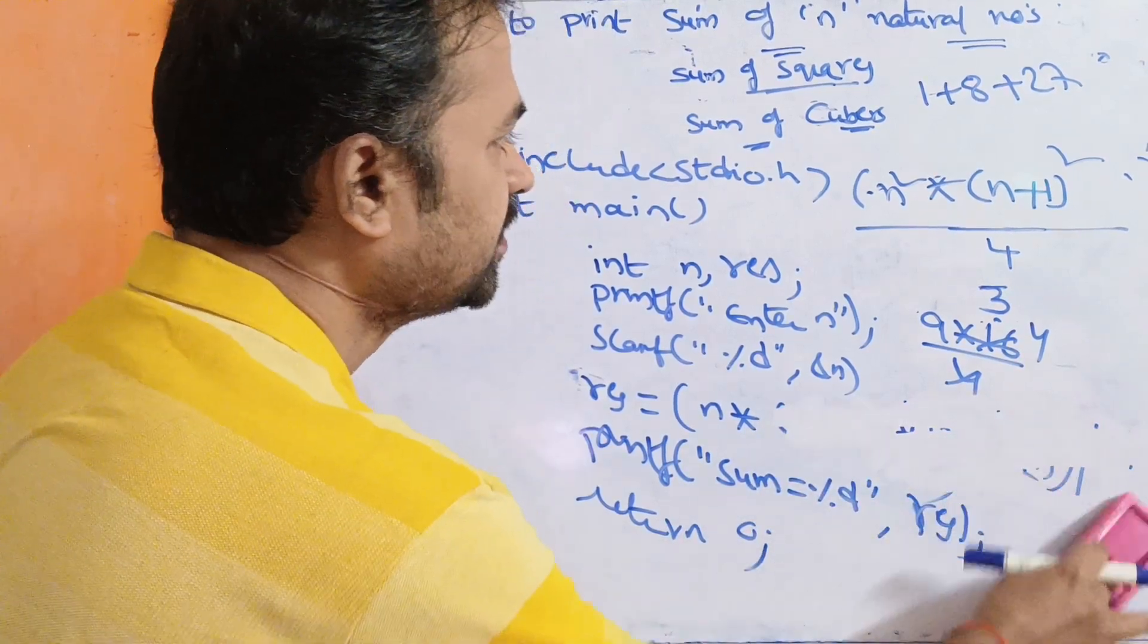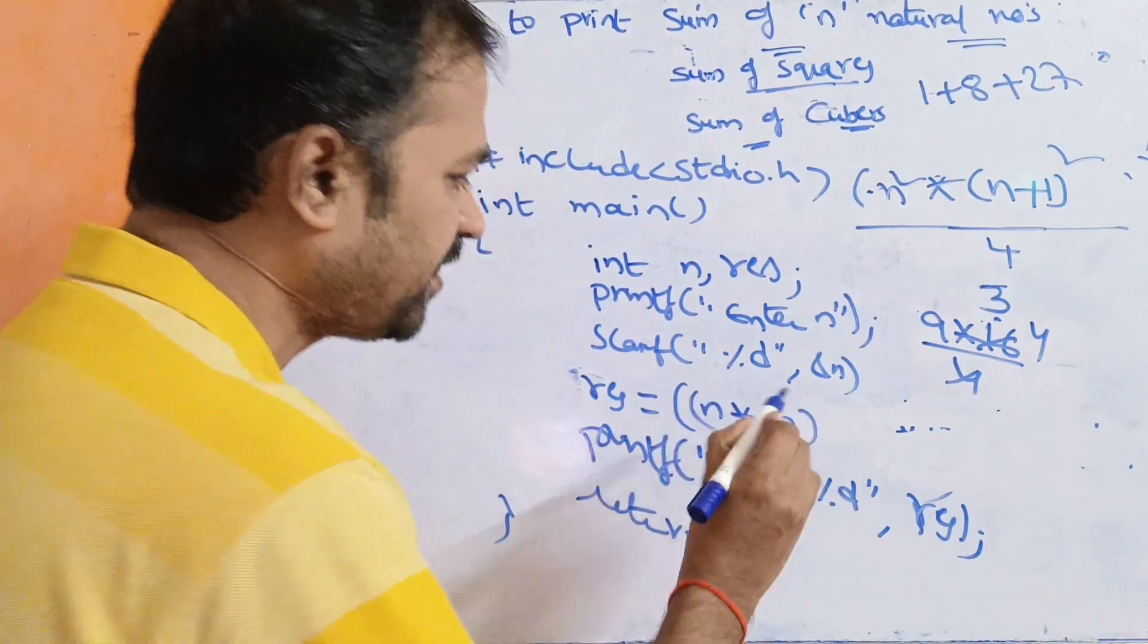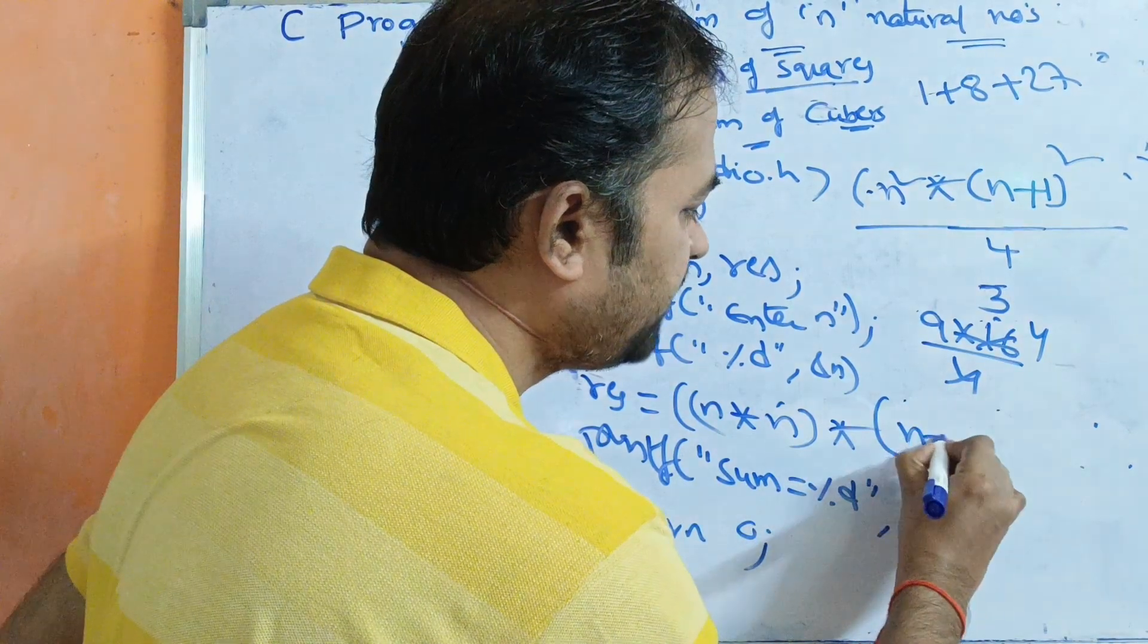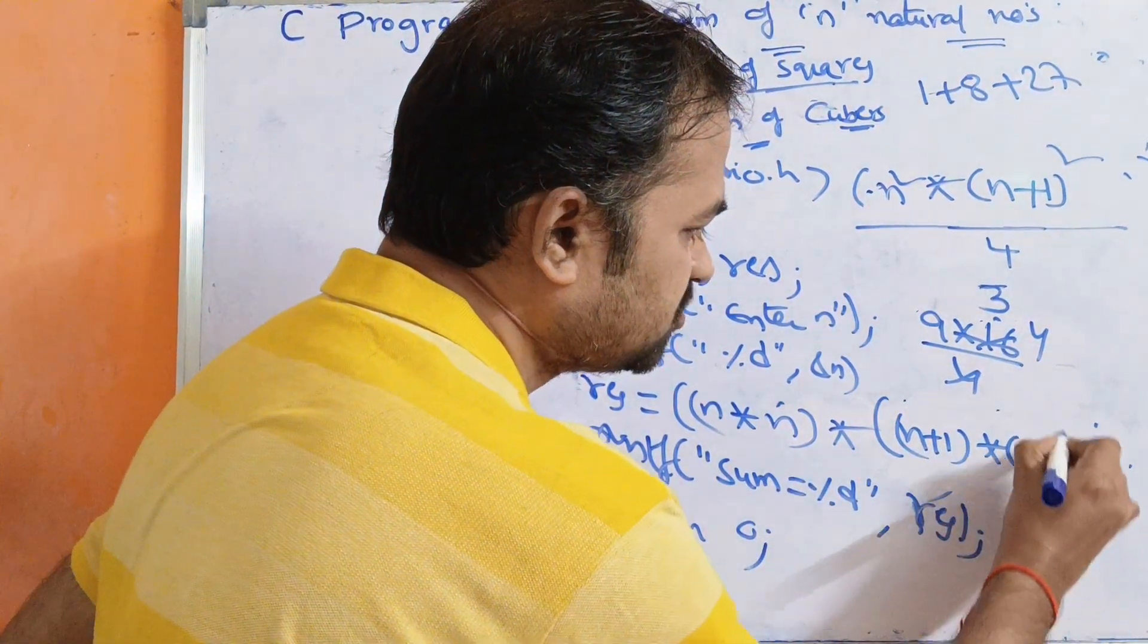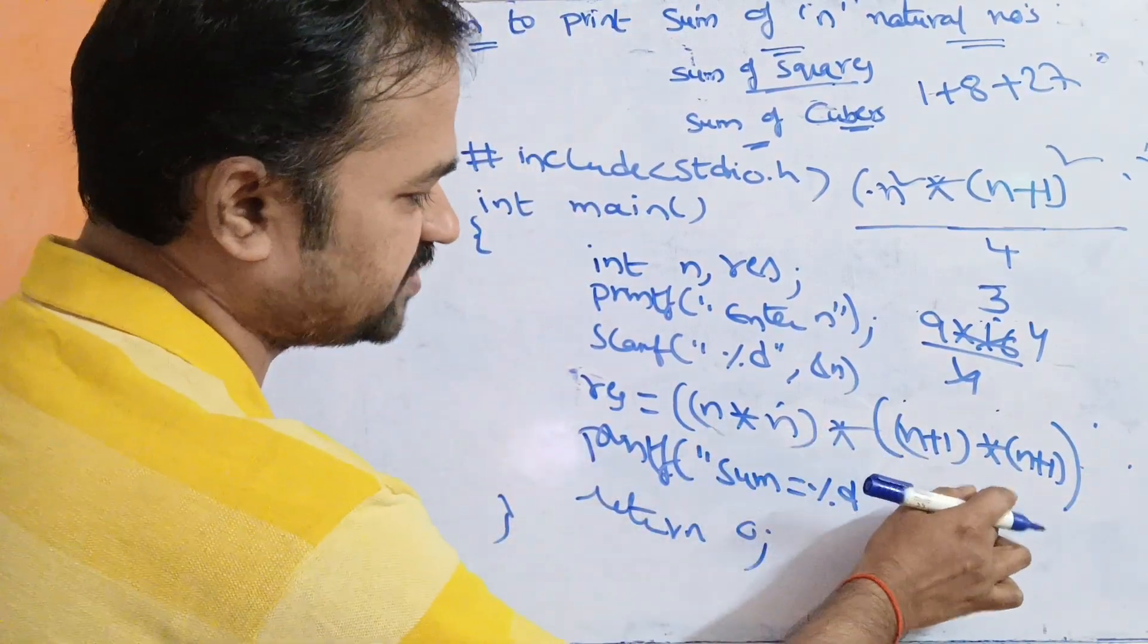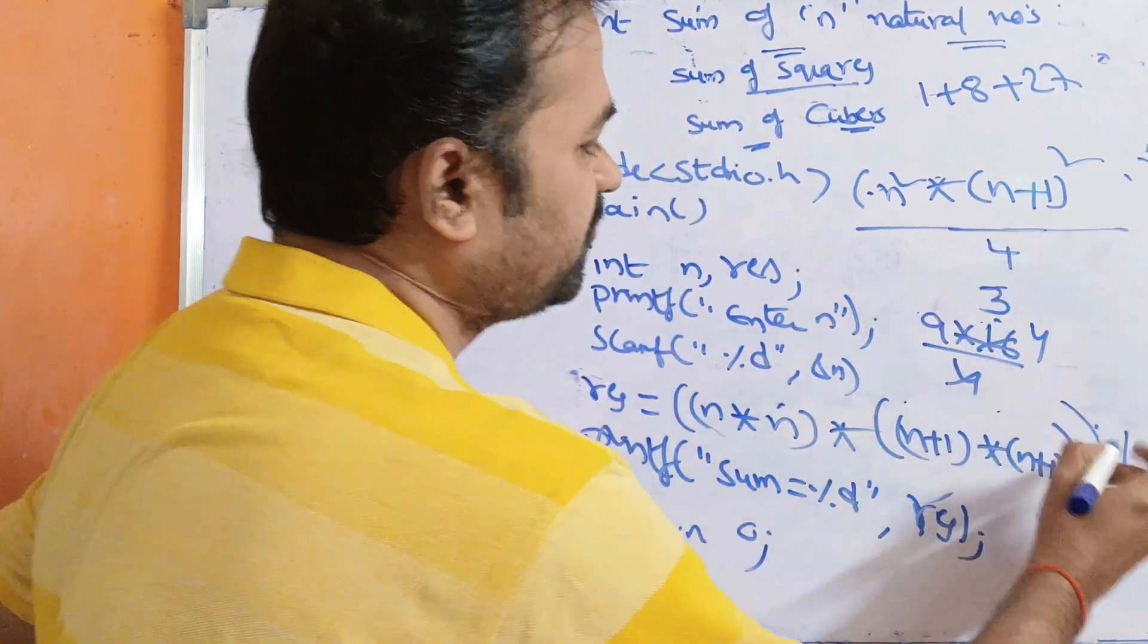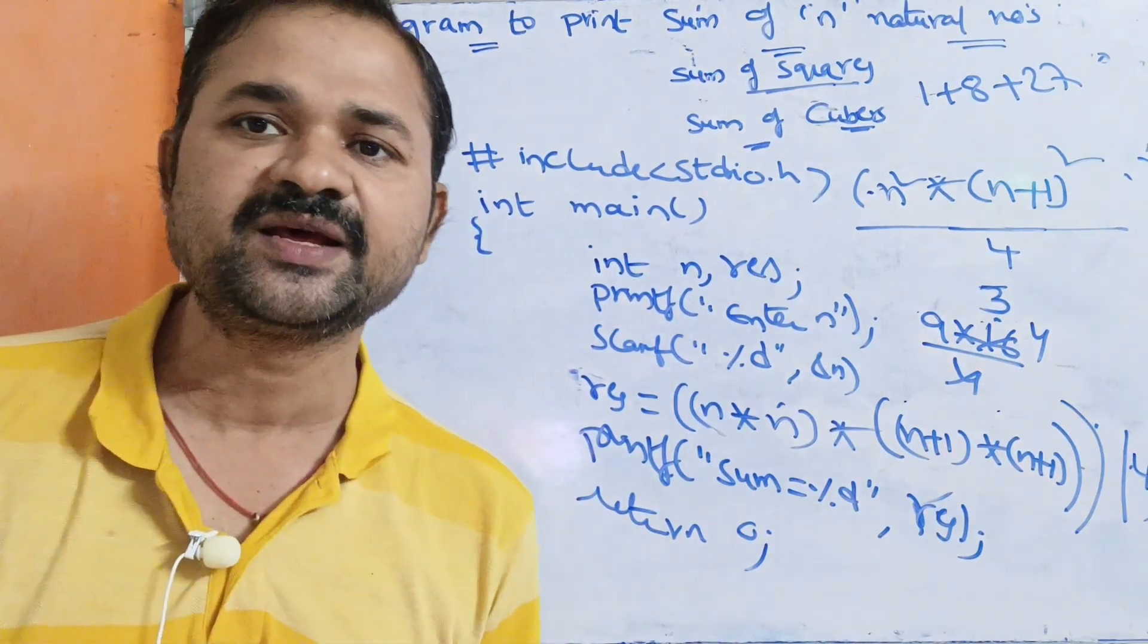Here we have two expressions. The numerator is first expression: n into n, written in parentheses, into the next expression (n+1) into (n+1). So this is one expression, this is another expression. These two form the numerator, divided by 4. By 4 is the formula. Then we display the sum.